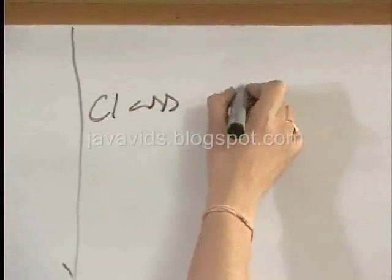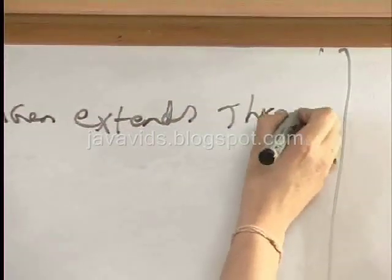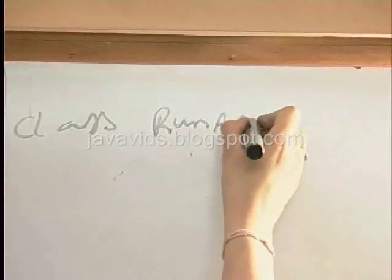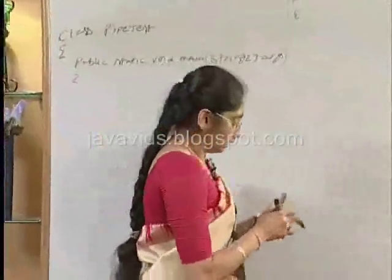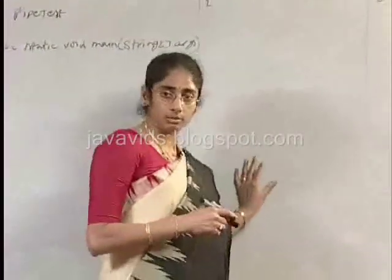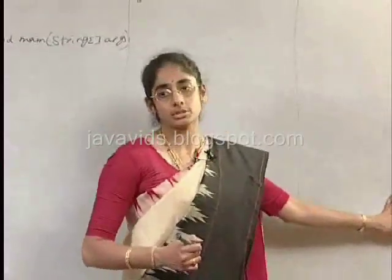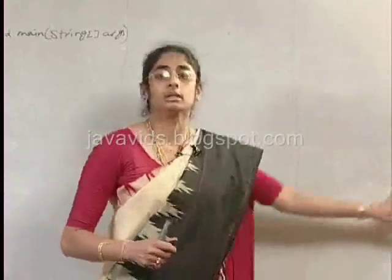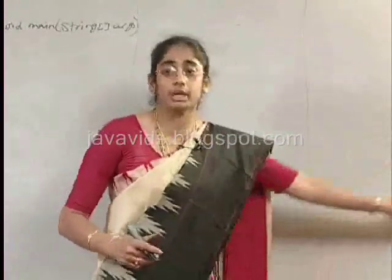Let us say we have class NumberGenerator extends Thread and we have class RunningAverage extends Thread. Both are thread classes. Now, the NumberGenerator is going to generate local data which has to be written to a pipe, which the RunningAverage needs to read from the PipedInputStream and process it. So NumberGenerator writes the data, RunningAverage needs to read the data coming from NumberGenerator. So NumberGenerator requires a PipedOutputStream, and RunningAverage requires a PipedInputStream to read from the pipe.